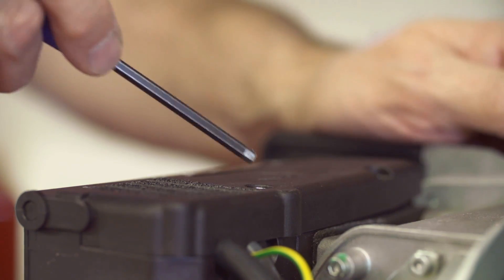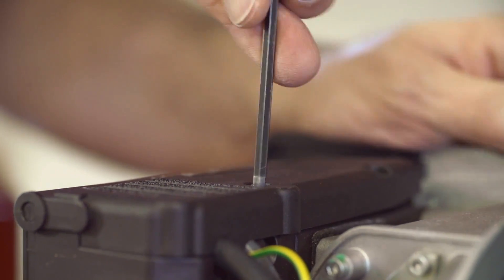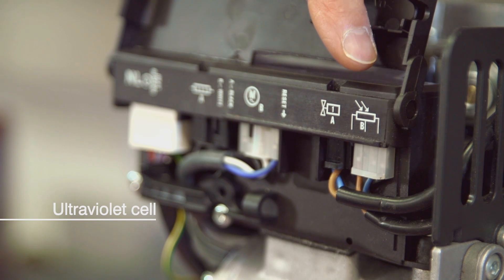Opening up the cover you'll see the connections are very much like the analog box except that the UV cell has a three wire connection.